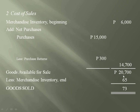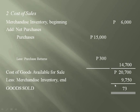Since this 20,700 is already in terms of money, better describe it now as not just goods available for sale, but as cost of goods available for sale. Merchandise inventory end is 65 bars × 150 = 9,750 pesos. Deducting merchandise inventory end of 9,750 from the cost of goods available for sale of 20,700 gives us 10,950 worth of goods sold — described as cost of goods sold or cost of sales.